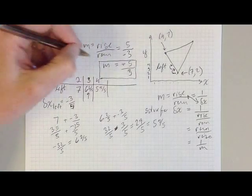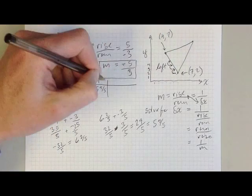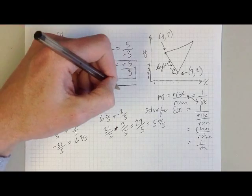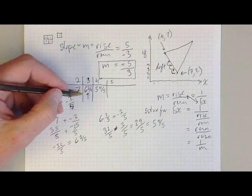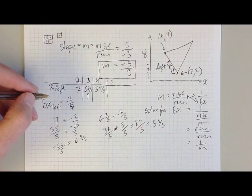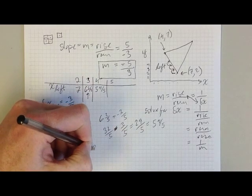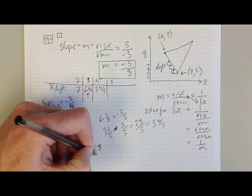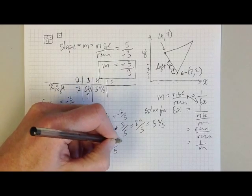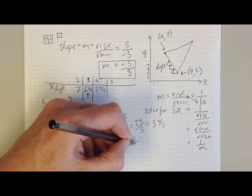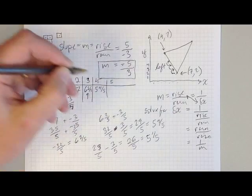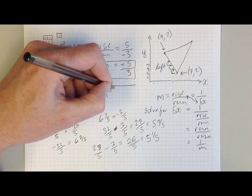And so that gives me scan line 4. Then I go up another scan line to scan line number 5. And that gives me, and I apply a negative 3 fifths to get from scan line 4 to scan line 5. And that tells me that in scan line 5, I'm at 29 fifths minus 3 fifths, which is equal to 26 fifths, which is equal to 5 and 1 fifths. So I get 5 and 1 fifths here.